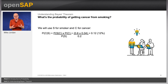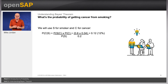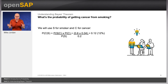We know that 4% of the population have cancer, but in this case, what is the probability of getting cancer given that you are a smoker? Using S for smoker and C for cancer, if we put the numbers into the formula — as you can see on the screen — you may want to pause the video here to go through this more slowly. The likelihood of getting cancer from smoking is 12% based on these made-up figures.